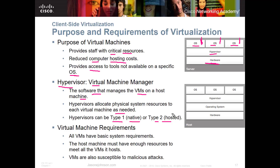When talking about virtual machine requirements, all VMs have basic system requirements. The host machine must have enough resources to meet the needs of all its VMs. For example, if your server only has 8 GB of RAM and your VM needs 8 GB, you won't have enough. You may need to beef it up to 64 GB so you can allocate 8 or 16 GB per VM while keeping enough shared between resources.